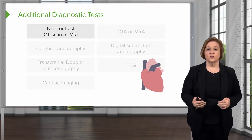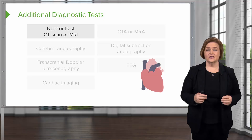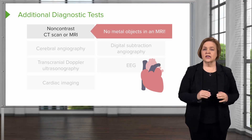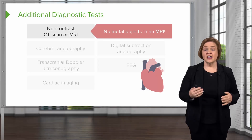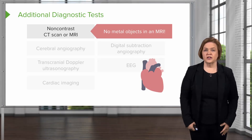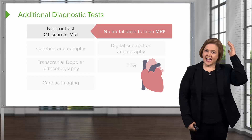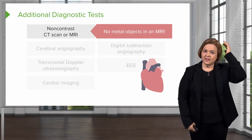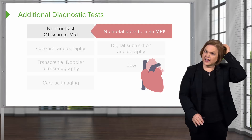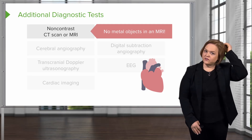CAT scan or MRI — remember, MRI is magnetic resonance imaging, and that is the one where you can't take anything metal in. When MRIs first started and the first time I took a patient to an MRI, I had barrettes in my hair — clips with metal on them. That magnet is so strong I could feel it pulling on my hair.